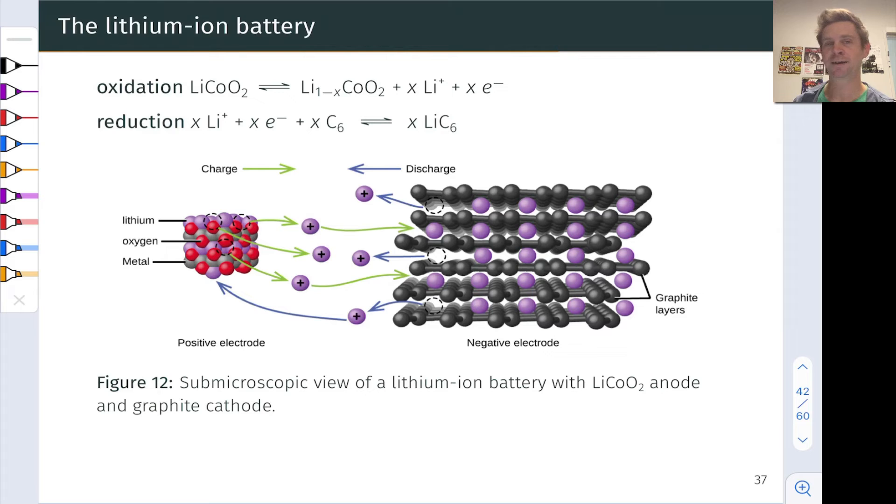The lithium-ion battery has hugely important practical applications and involves oxidation and reduction processes involving lithium metal kind of sorta and lithium cation. And so, at the anode, reduction of lithium cations occurs. So we've got X lithium cations combining with X electrons.